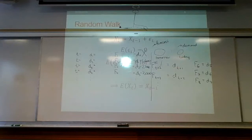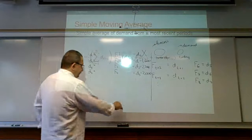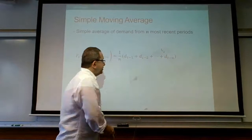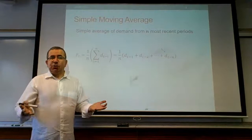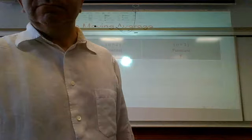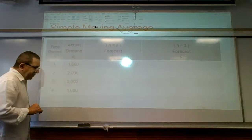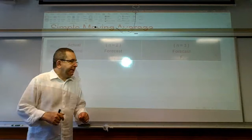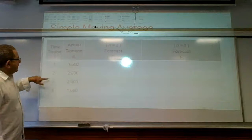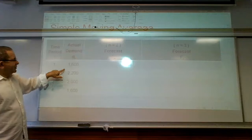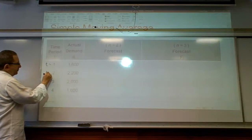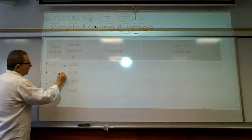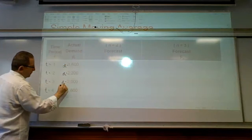That is called simple moving average, which is our second forecasting method. In simple moving average, the idea is to take the average of the most recent N periods. Here T denotes our time periods, and we have D1, D2, D3, D4, etc. as our actual demands, and F1, F2, F3, F4 as our forecasts.